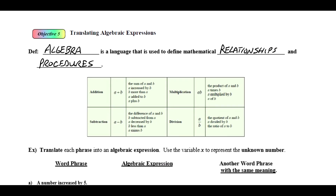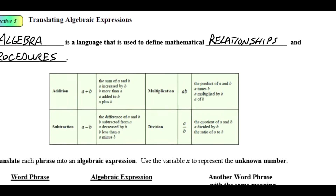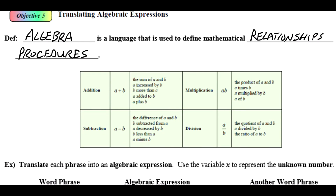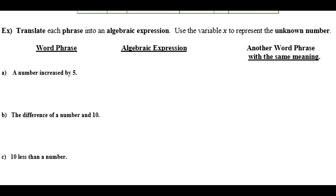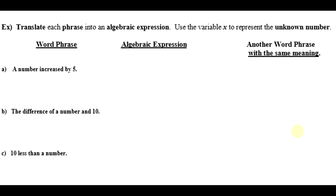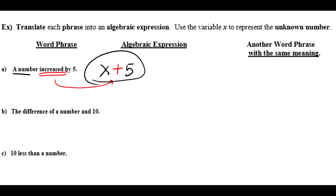Let's look at a couple of examples. We're going to translate each phrase into an algebraic expression using the variable x to represent the unknown number. One of the things I look for is the operation — 'increased by' represents addition. So 'a number increased by 5': a number is x, increased by 5, gives us x + 5 as the algebraic expression. That's pretty straightforward.